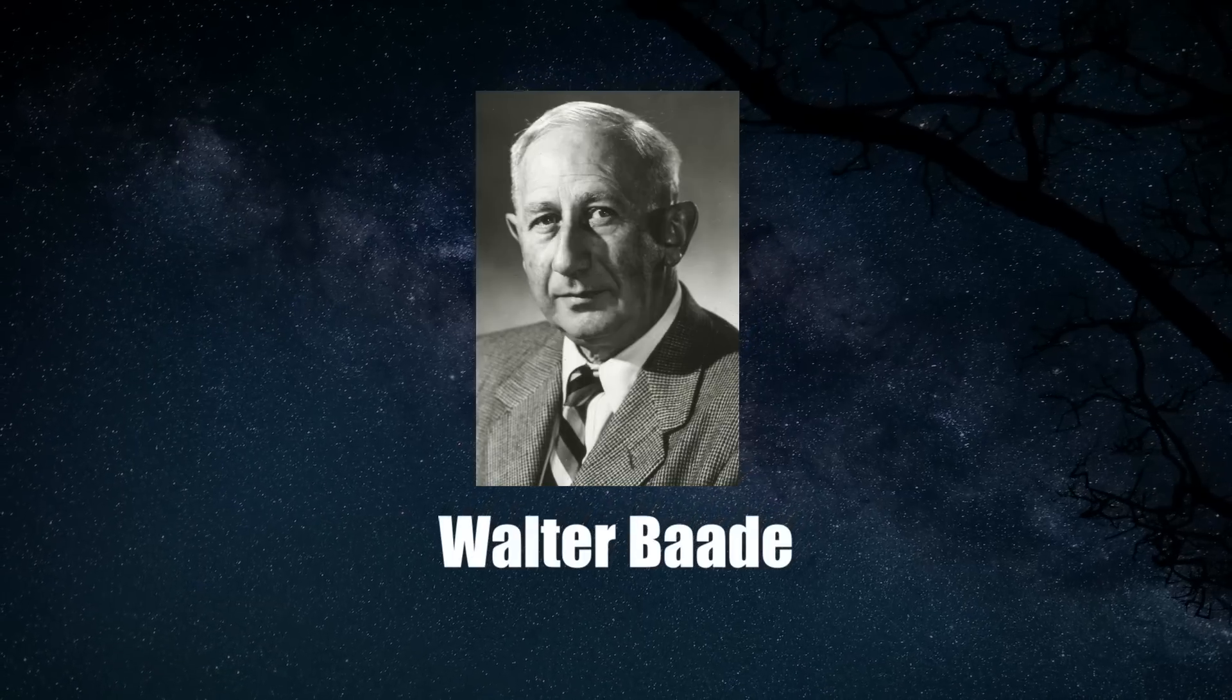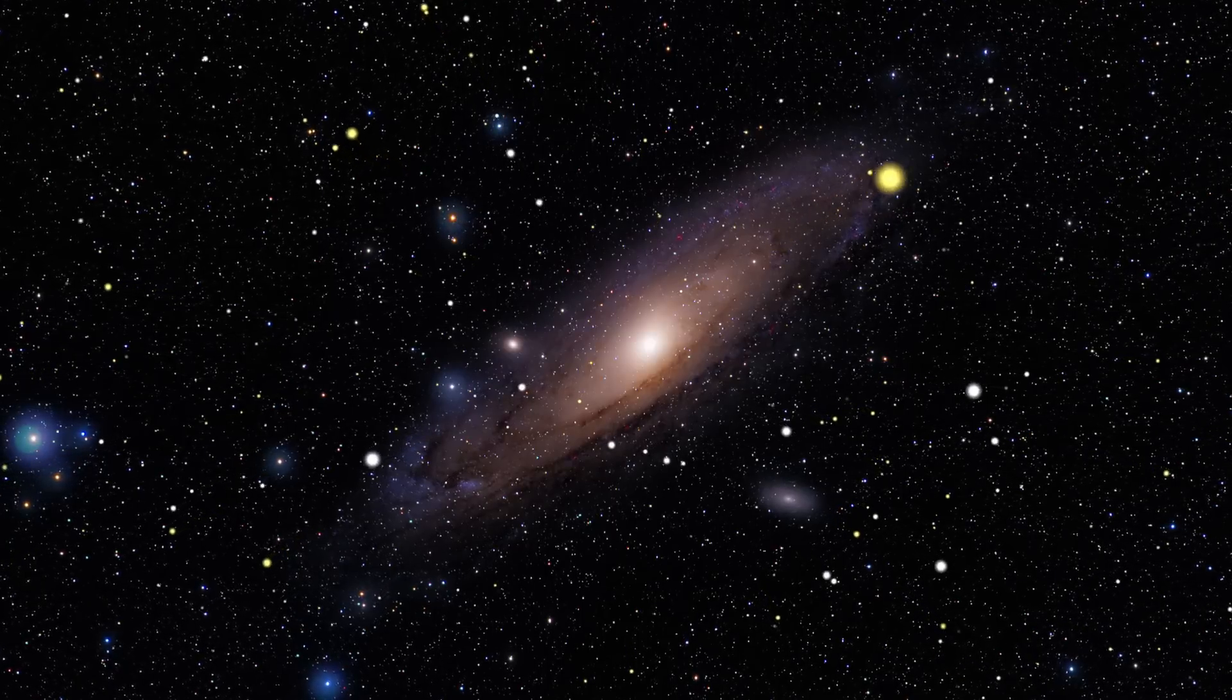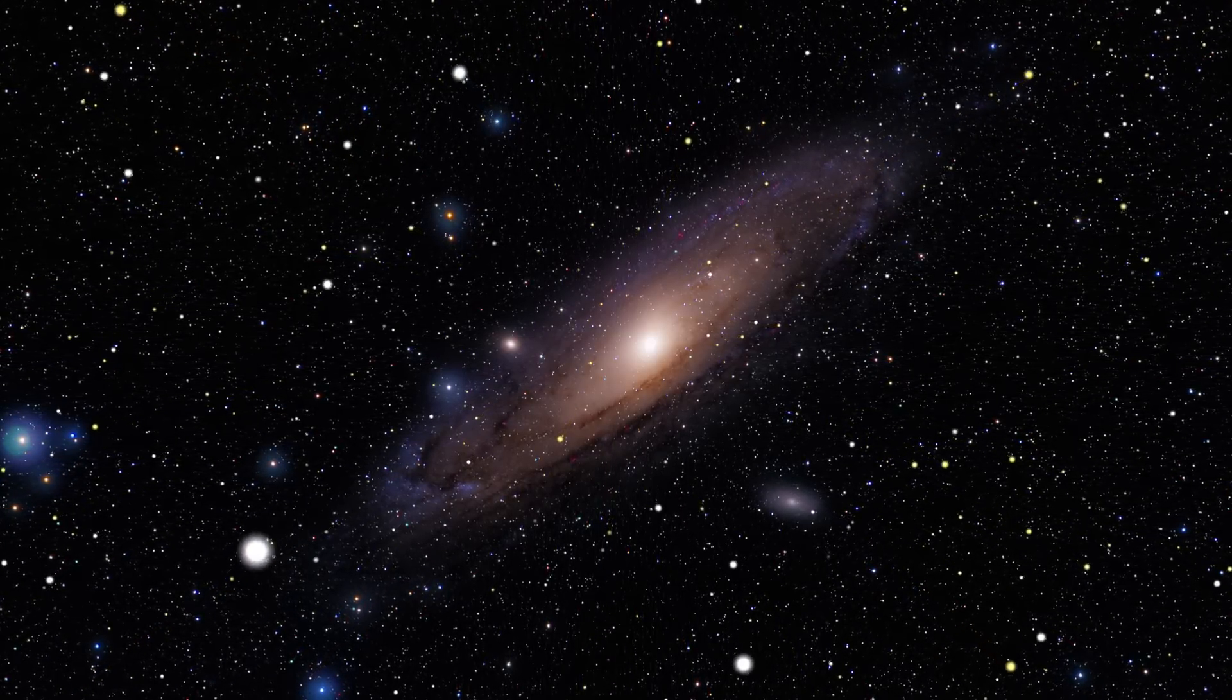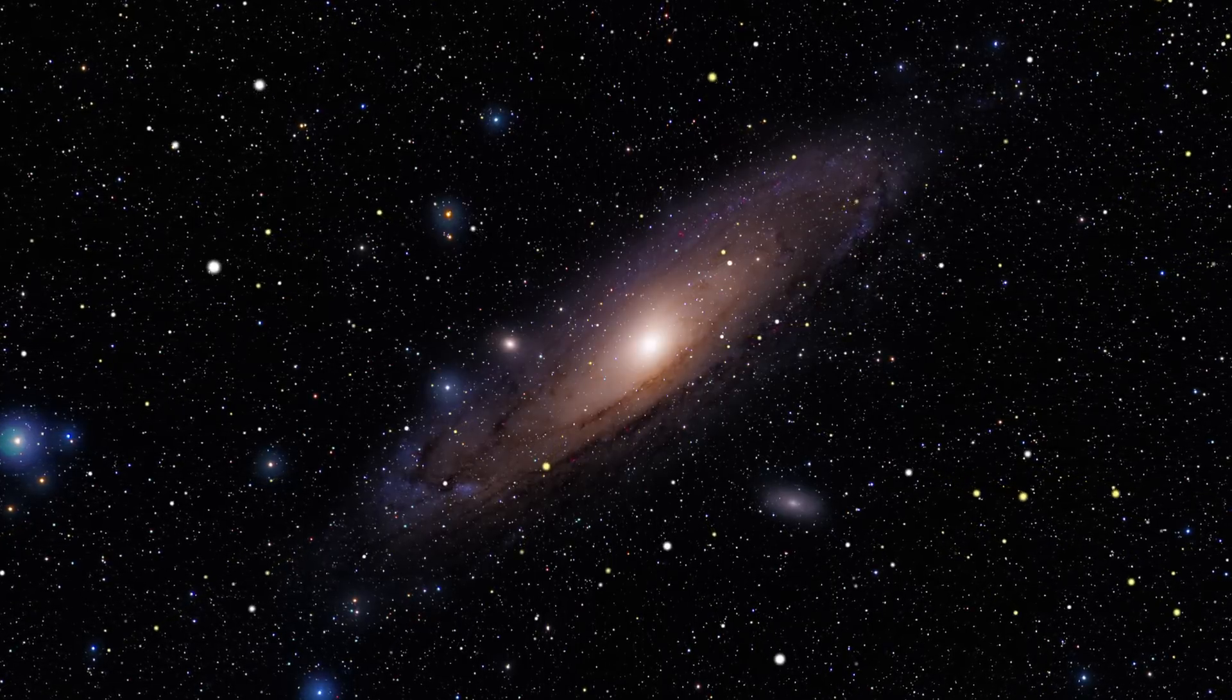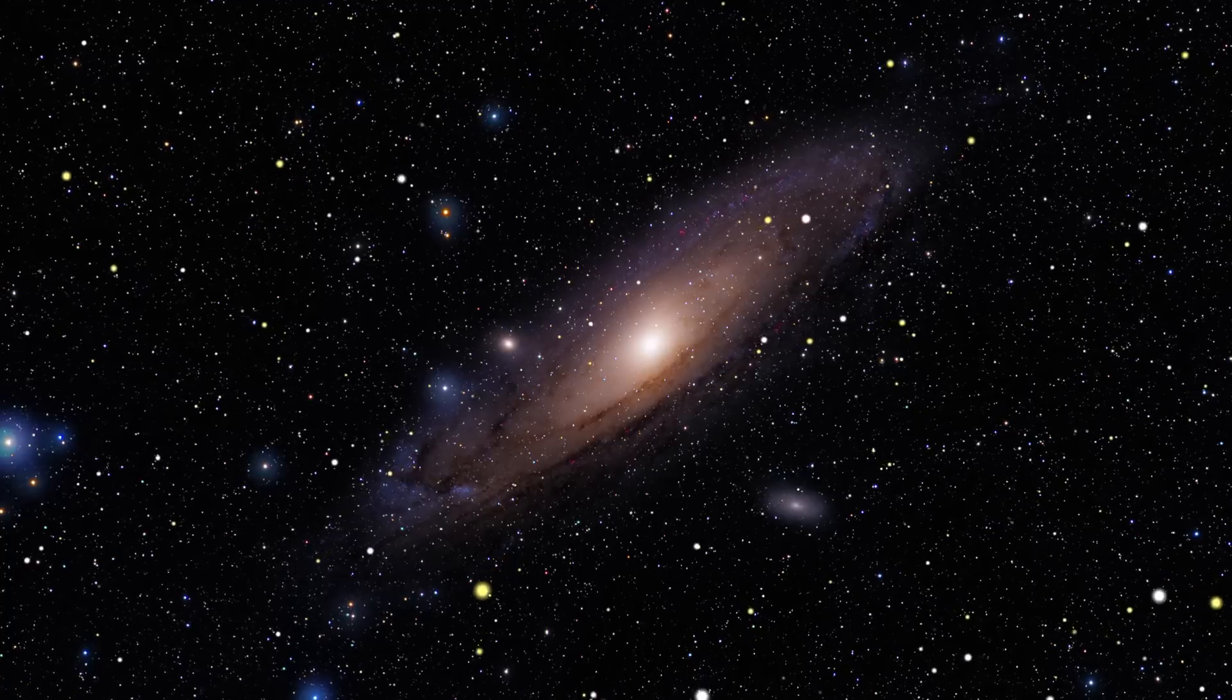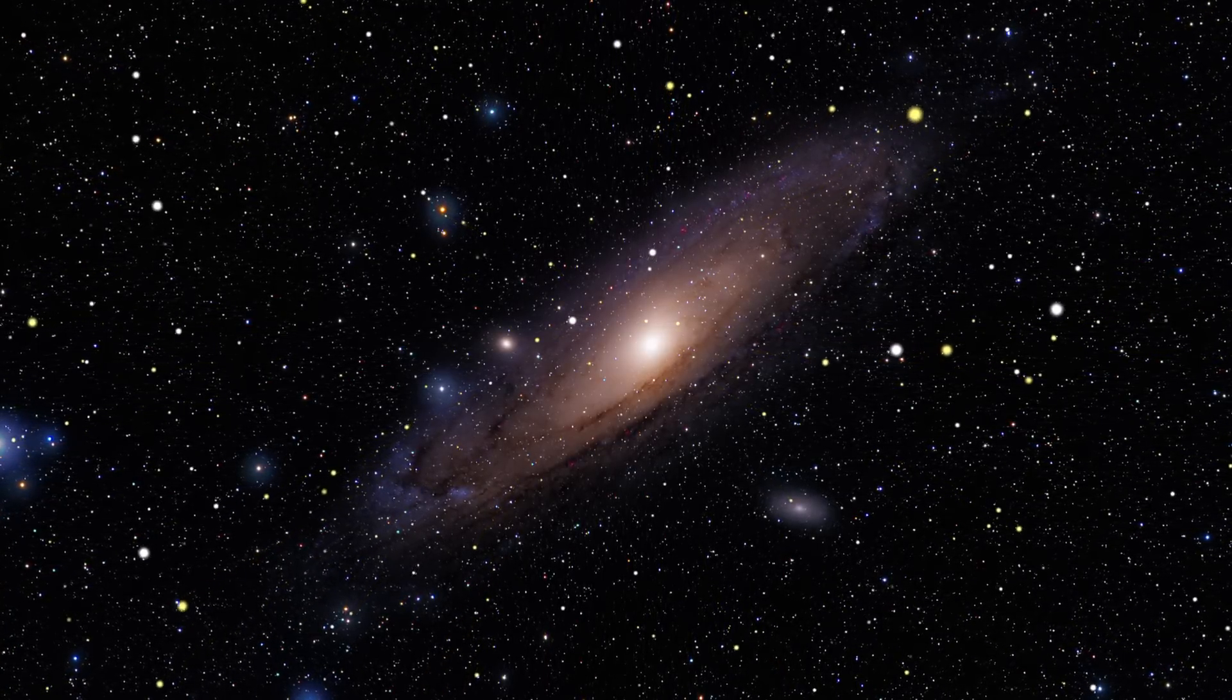pushed the Mount Wilson 100-inch telescope to its very limits in order to achieve the resolution of the nucleus of the Andromeda Galaxy and of two of its elliptical companions. He took advantage of the blackout. What he discovered was that Andromeda was hosting two kinds of stellar populations, which he named Population I and Population II.